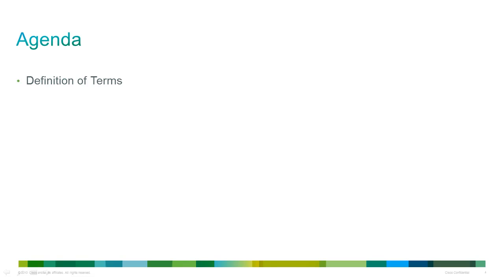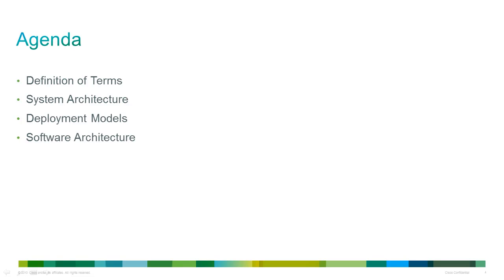This presentation will be split into four sections: Definition of Terms, where we will briefly run through the main terminology used when discussing Unified CCMP architecture; System Architecture, where we will dive into how Unified CCMP is put together; Deployment Models, covering the various models available in Unified CCMP 8.5; and finally a deep look at the software architecture and how components interact with each other.